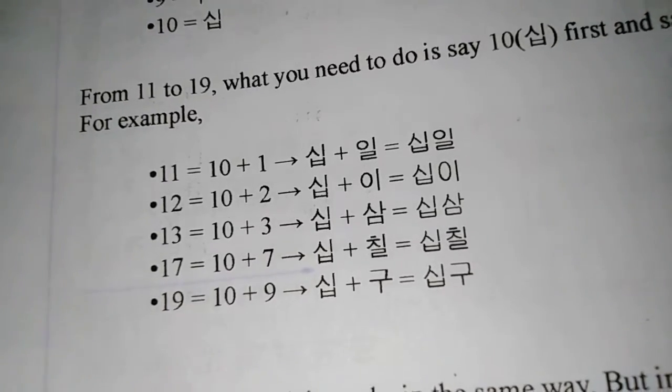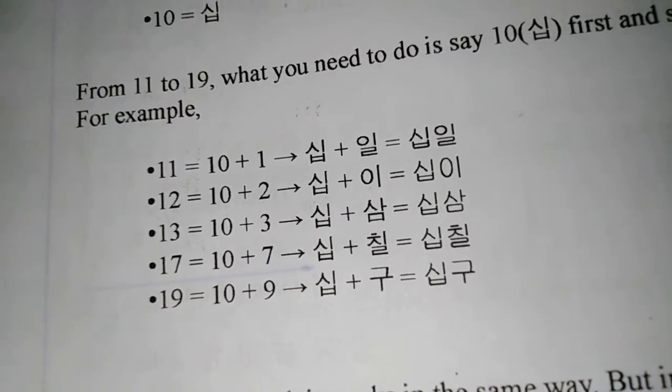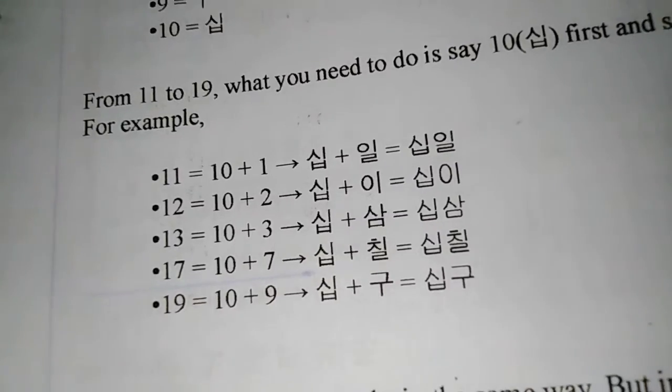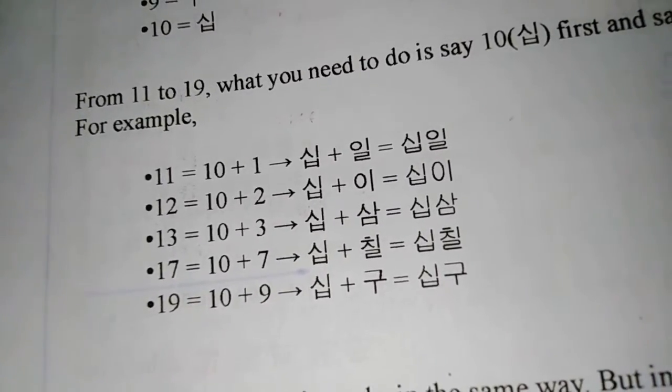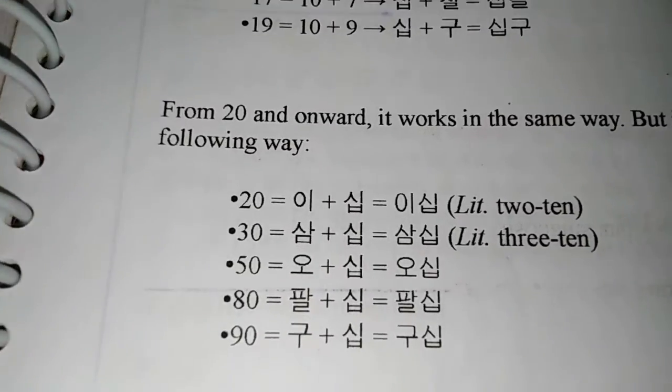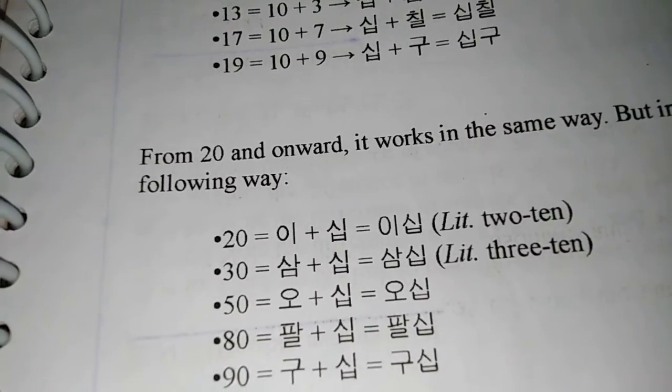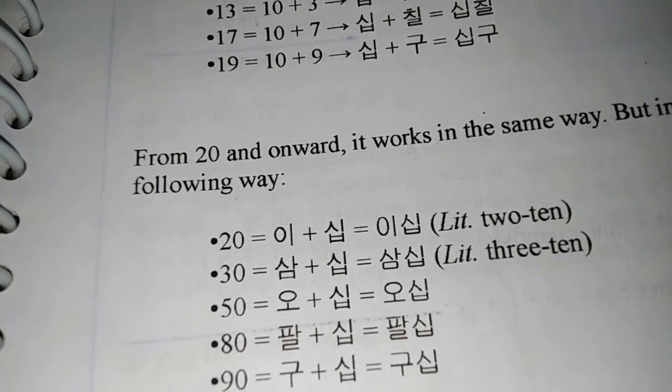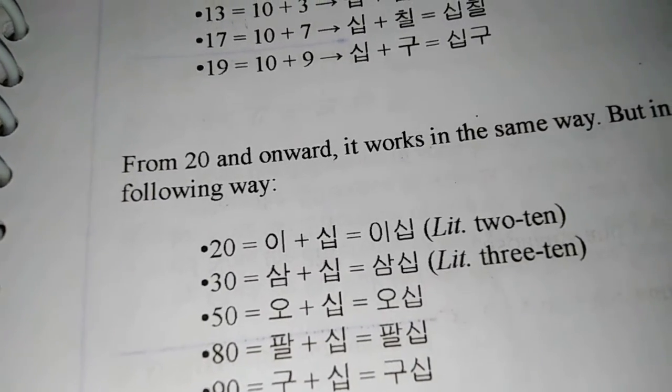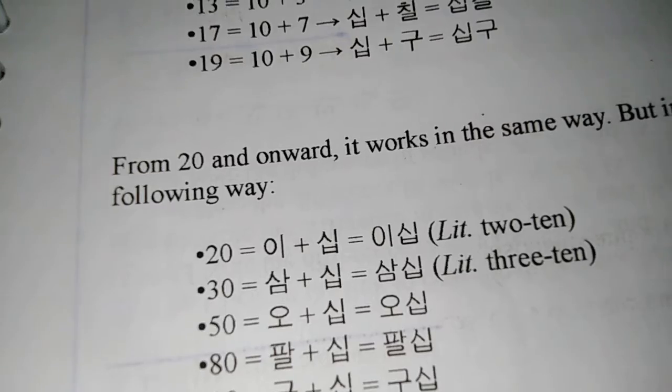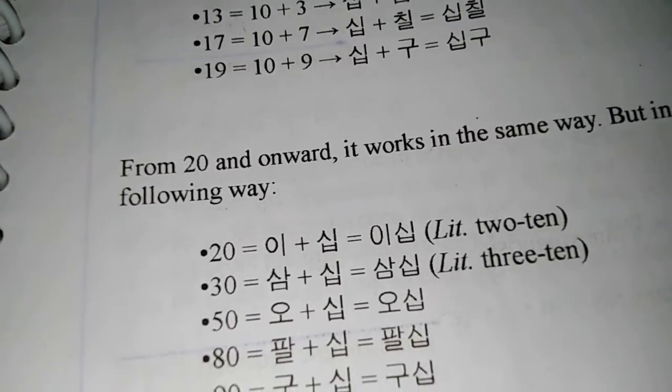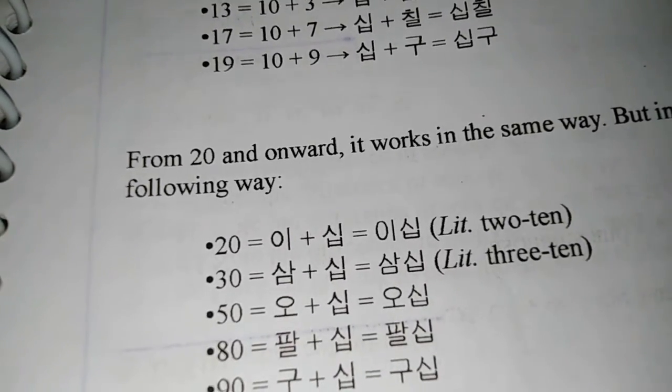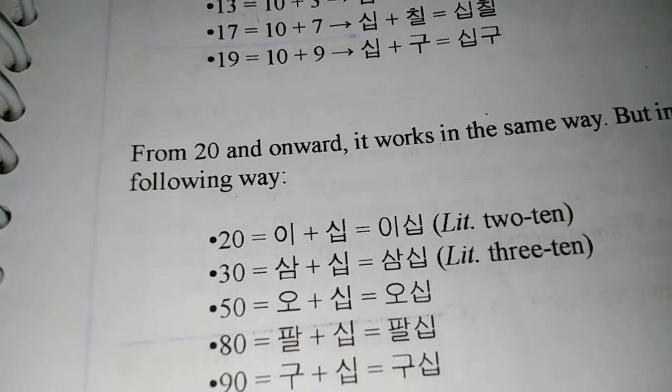When you go to twenty, thirty, forty, that is also in a way tens. Suppose you take twenty—twenty in a way is two plus ten, so you just write it like that. You write two and then you write ten. Two is e and ten is shib, so twenty is e-shib. Like that: sam-shib, sa-shib, oh-shib, yuk-shib, chil-shib, pal-shib, gu-shib.